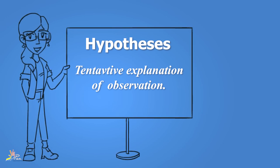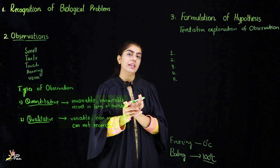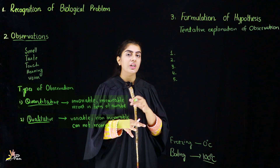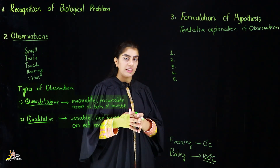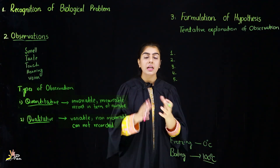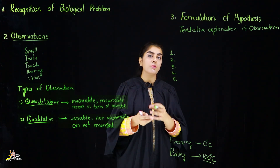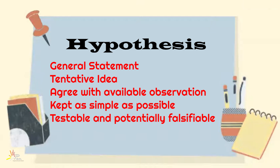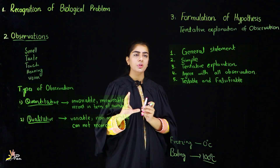A hypothesis is a tentative explanation of observations. 'Tentative' means unconfirmed — it is not yet confirmed, it is falsifiable and testable. You can test it and you can also prove it wrong. Once a hypothesis is formed, it should follow five steps. It should be a general statement, it should be a tentative explanation, it should agree with all possible observations, it should be as simple as possible, and it should be testable and falsifiable.